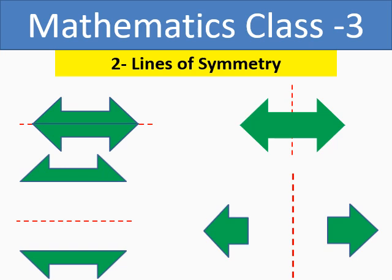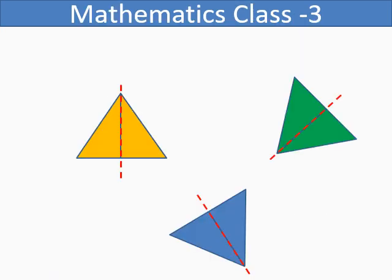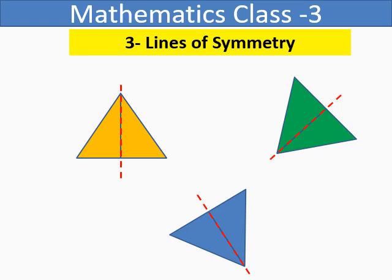Let us take the example of three lines of symmetry. In an equilateral triangle, in which all the sides are equal, we will get three lines of symmetry passing from the corners or vertices of the triangle.